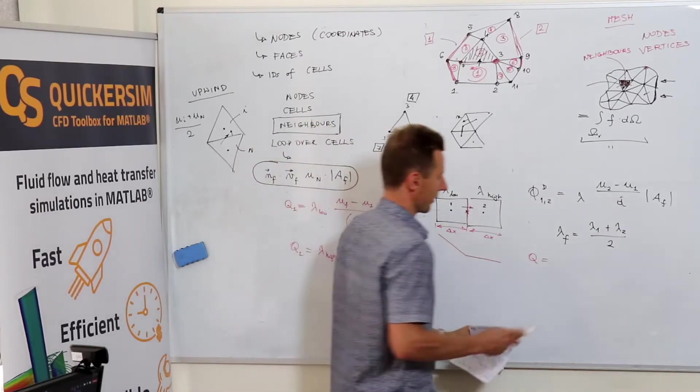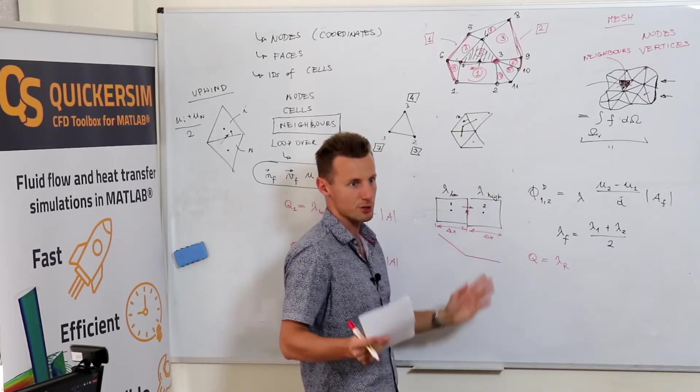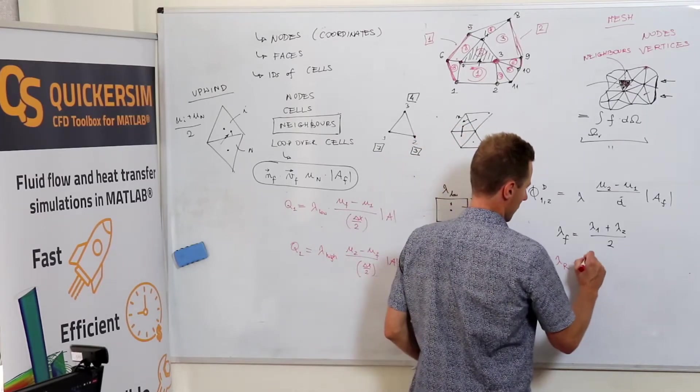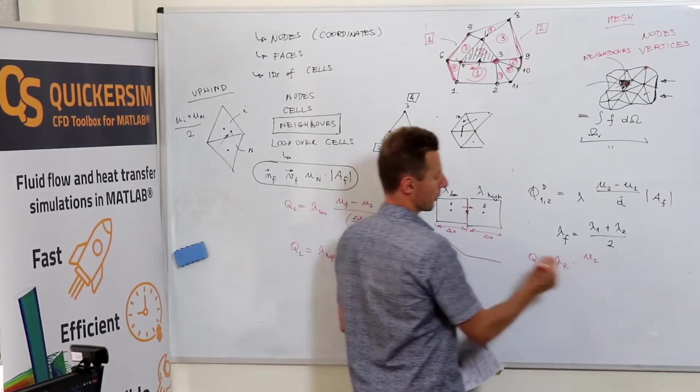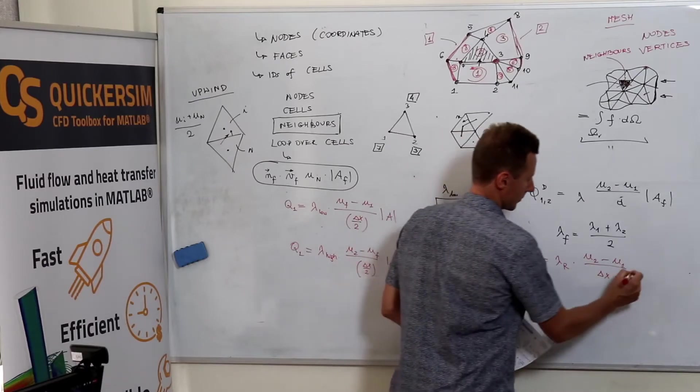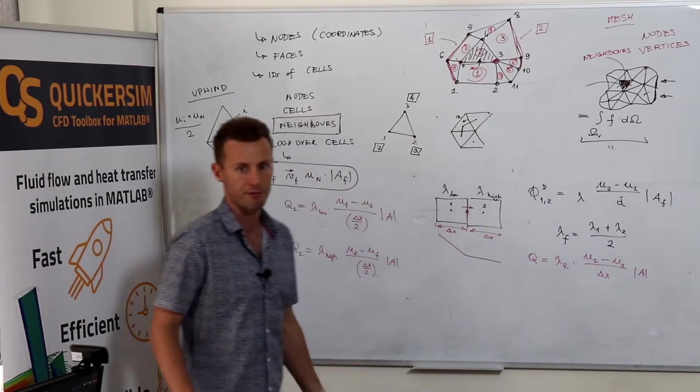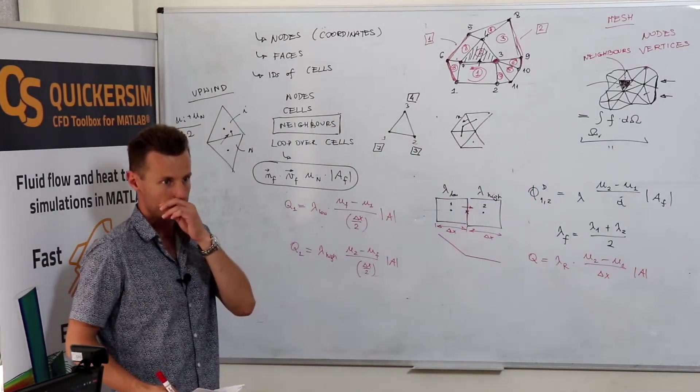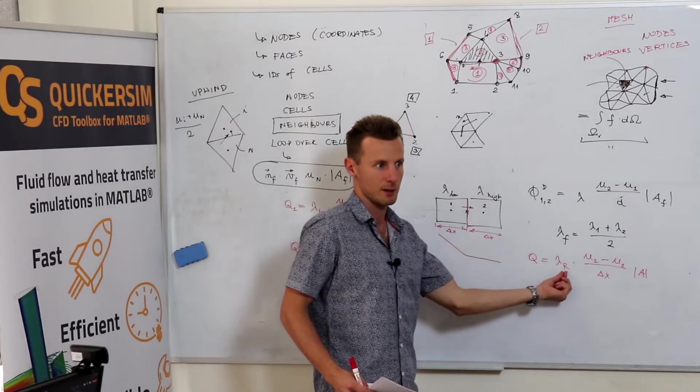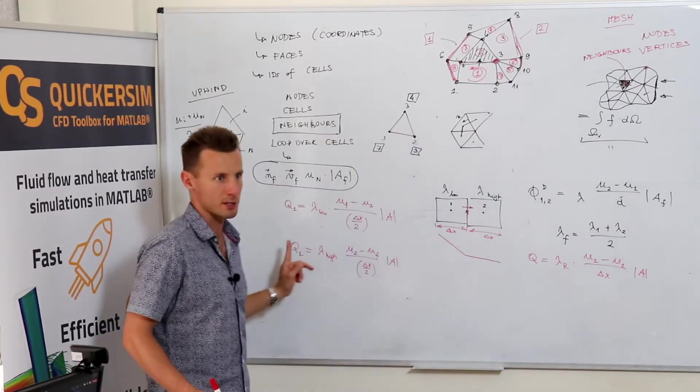So, we would like to have something like lambda resultant or averaged or whatever times u2 in the neighboring cell minus u1 at my cell divided by delta x times surface area of the face. Right? Now, the good question is how should we calculate resultant value of the conductivity to have the conservative scheme?